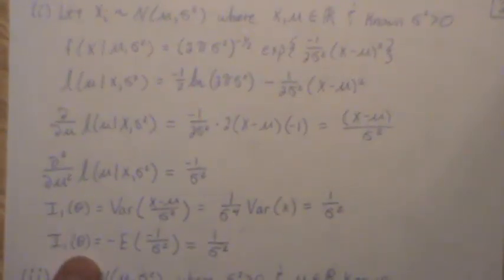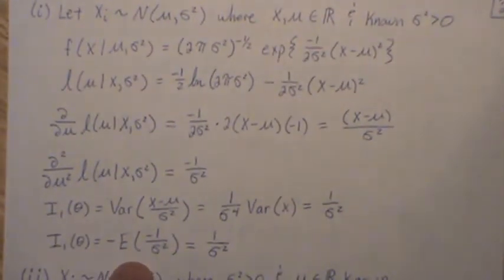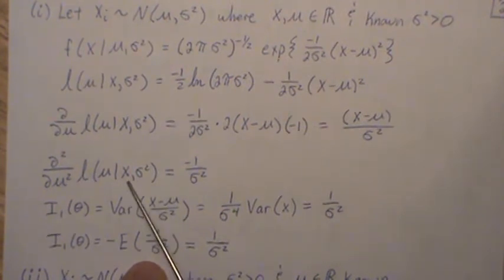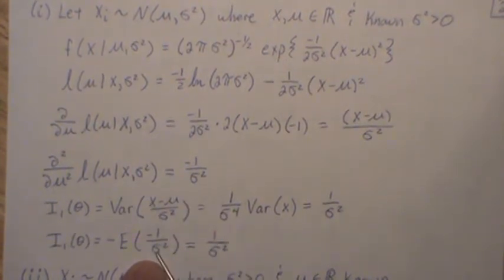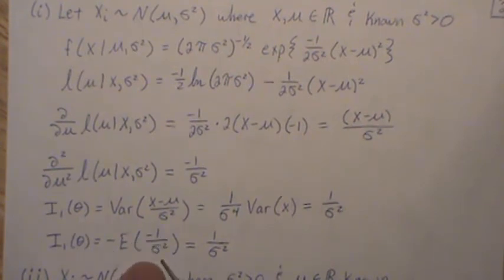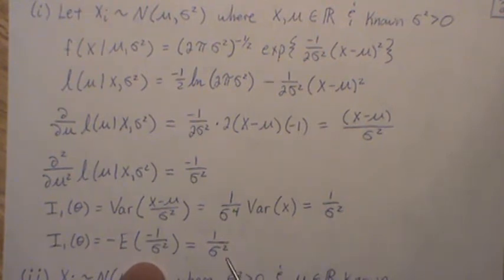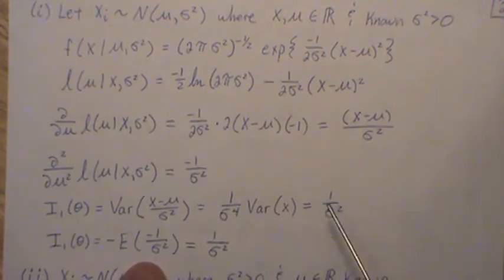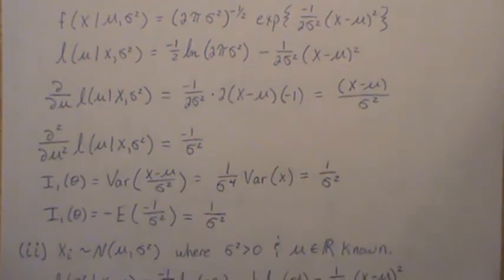Another formula we can use is the negative expected value of the second derivative. We plug that in, the minus signs cancel, and since the second derivative is a constant with no x's, we just get one over sigma squared. Of course we better get that because the formulas tell us we should.